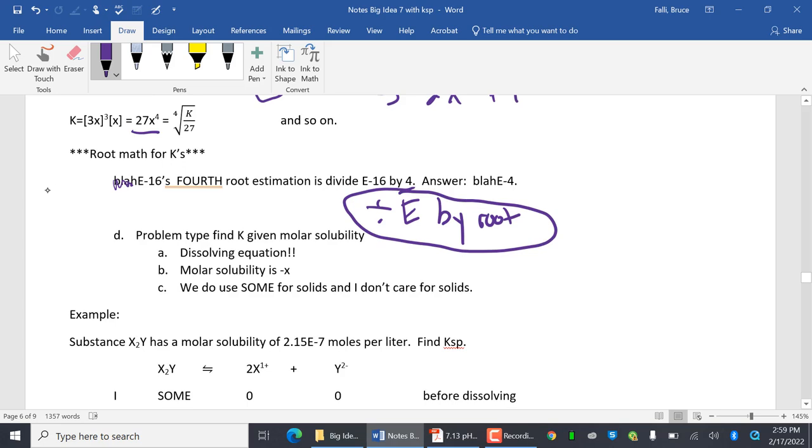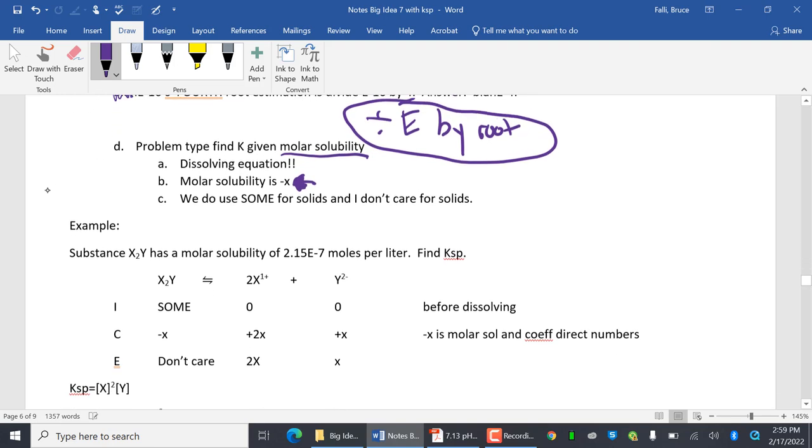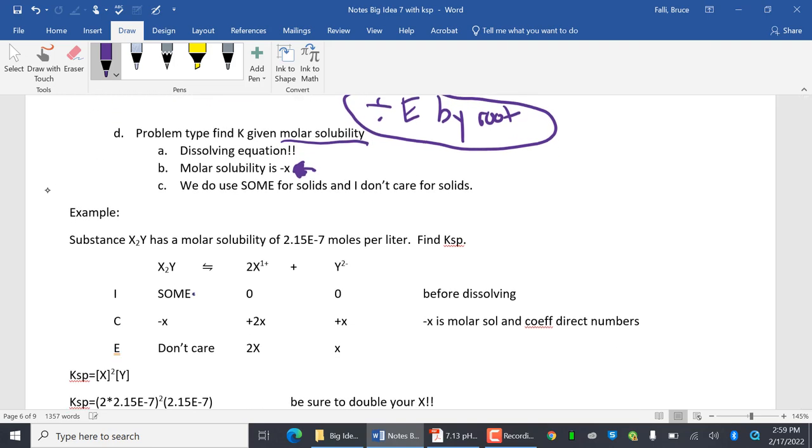Problem type, find K given molar solubility. So this time I'm going to give you molar solubility. It is important to know that molar solubility is minus X. It is a positive number, but it's going to be the minus X when it dissolves. We do use some for solids, and I don't care for solids. So some, I don't care. Again, before it dissolves, I've got some solid, nothing, nothing. Minus X, this will always be minus 1X. Just note that will always be 1. And then this is based upon what the balanced equation tells us.